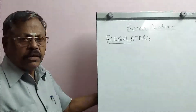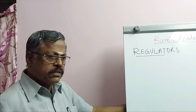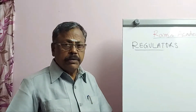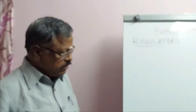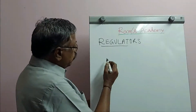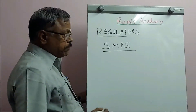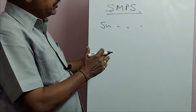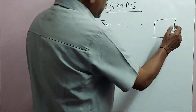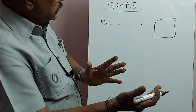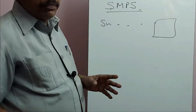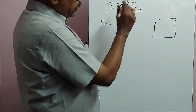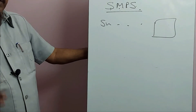People are not using linear regulators with bulky transformers and large capacitors anymore, as the size of the power supply block becomes very large. Therefore it is being discouraged. Nowadays, these regulations are done with the latest technology called SMPS — Switched Mode Power Supply. SMPS has many advantages: it provides a smaller size for the same capacity as a linear regulator. For the same voltage and current rating, the SMPS size is only one-third to one-fifth of the linear regulator. SMPS is now very popular and will be discussed in detail in the next video.